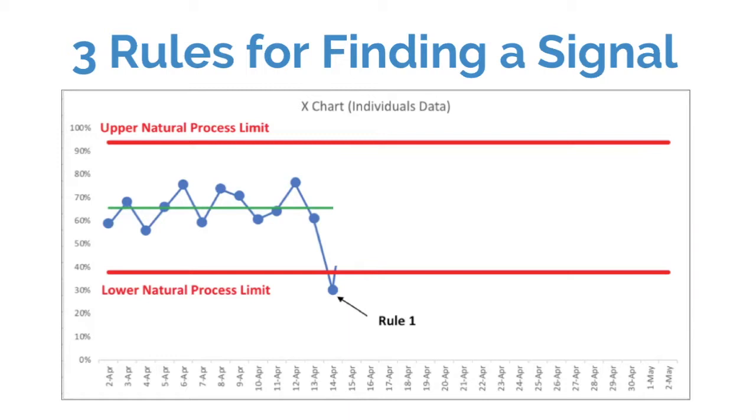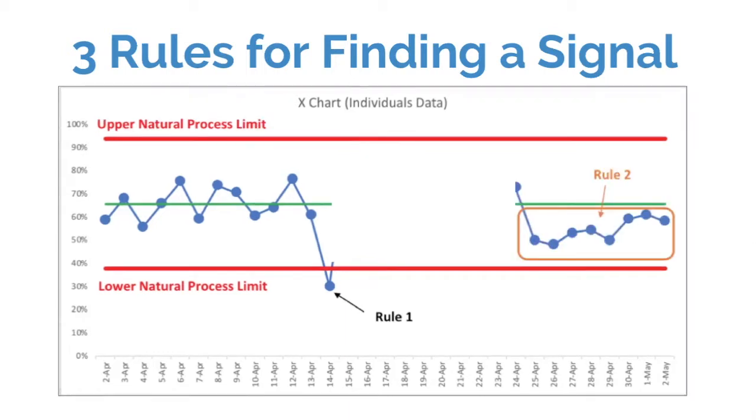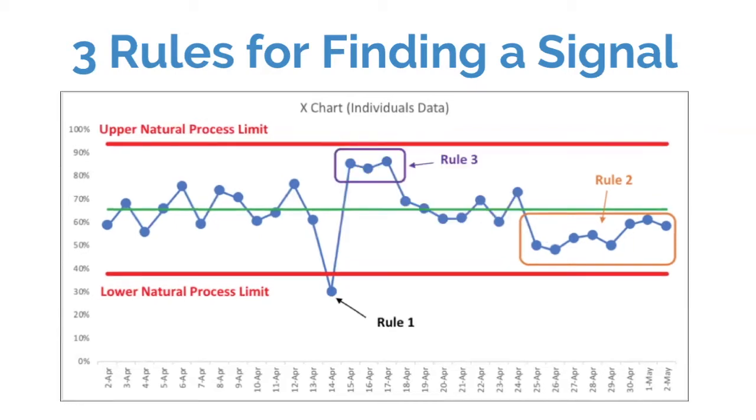Our second rule is looking for a run of eight or more consecutive data points that are either above or below the average. This is unlikely to happen randomly. It's another signal that something has changed in the system, and we probably now see a shift where the metric is fluctuating around a different average than before. Rule three calls for three out of four, which could mean three consecutive data points that are closer to the same limit than they are to the average. Any of these three things happening tell us that something has changed, and that's a good time to go investigate and figure out why.